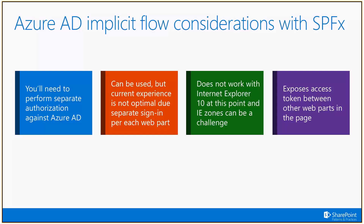The challenge with Azure AD — getting access to Azure AD assets and resources — is around the fact that within SharePoint Online, we actually use a different authorization model. SharePoint Online uses forms-based authentication, and Azure AD uses Azure AD authentication. What it means is that the access tokens are not directly one-to-one. That means whenever you need to access a web API secured within Azure AD, you will need to have a separate sign-in. We absolutely understand that that's not optimal, and we're looking into changing that in the future.